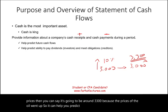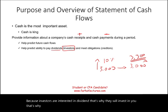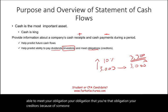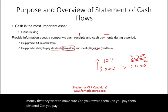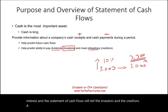It also helps you predict your ability to pay dividends, because investors are interested in dividends — that's why they invest in you and give you money. It also helps you predict whether you're going to be able to meet your obligations: your debt obligations and your creditors. If someone wants to invest in you, buy stocks, or lend you money, they first want to know: can you reward them, pay dividends, pay back principal, and pay the interest?